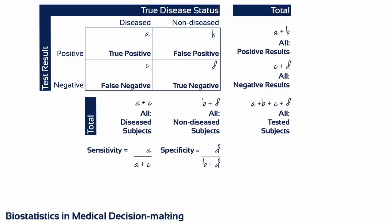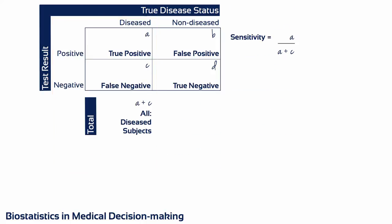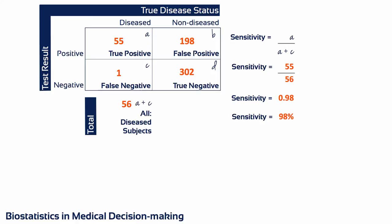This is the 2x2 table in equations needed to calculate sensitivity and specificity. To calculate sensitivity, you need to pay attention to the left-hand column. Sensitivity equals A divided by A plus C. For example, if we have these data, then sensitivity equals 55 divided by 56, which is 0.98 or 98%.